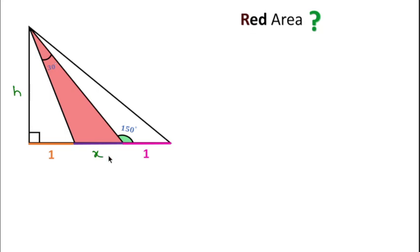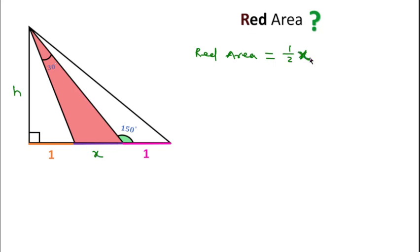Since we have to find the area of this red triangle, the red area equals 1/2 × base × height. The base is x and the height is h. But we don't know x and h yet, so we need to find them first.